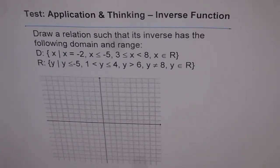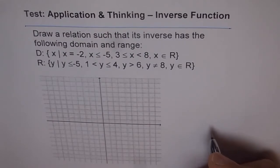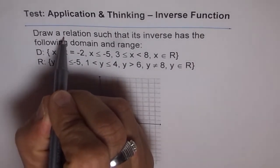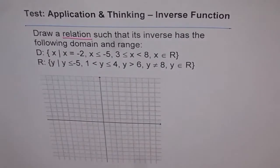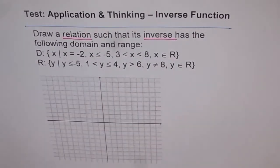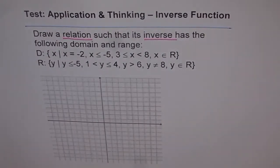A graph paper is given to us to plot and draw the relation. Copy this problem and think about it — there are key words to mark. First: draw a relation, so it is not a function, it is a relation. And what is given to us is the inverse domain and range. So we have to draw the relation such that its inverse gives this domain and range.